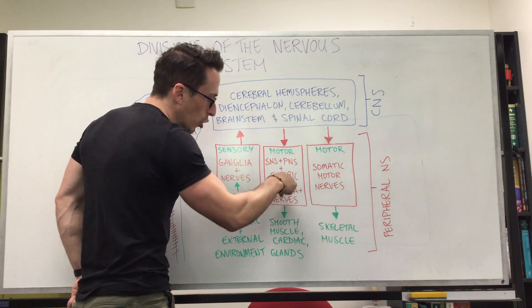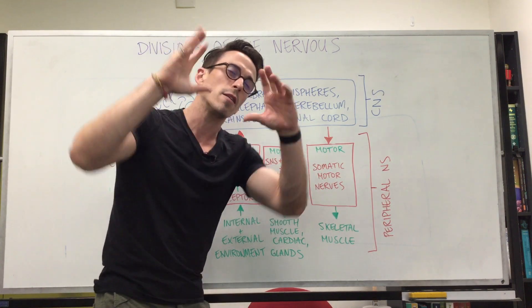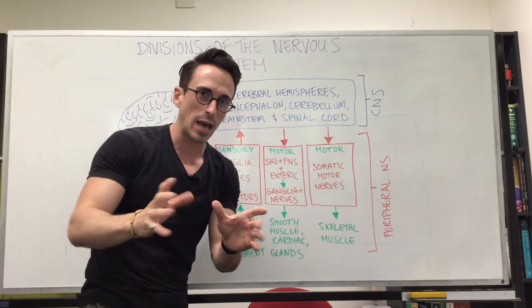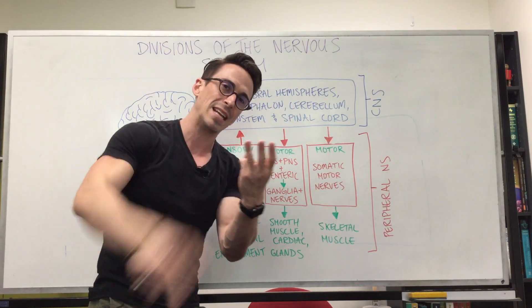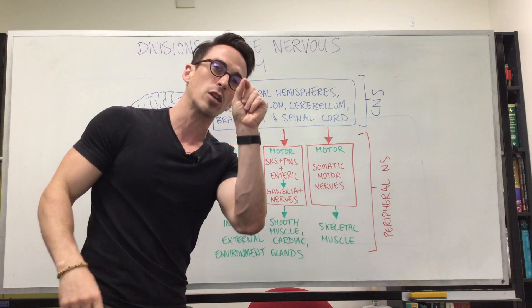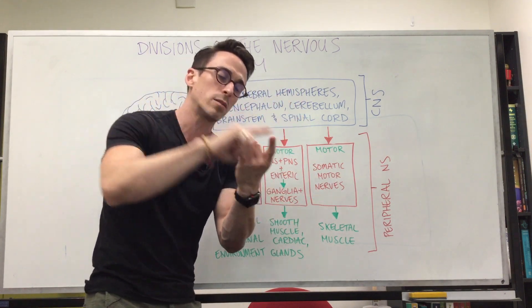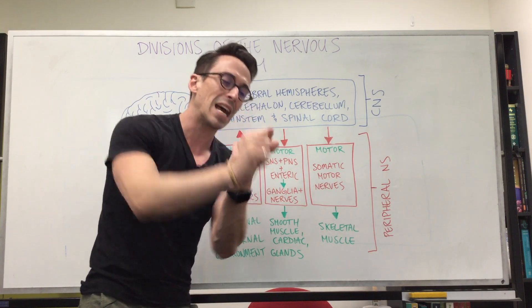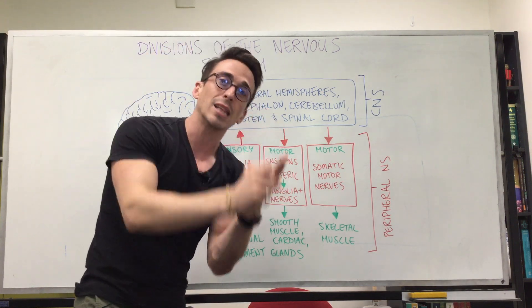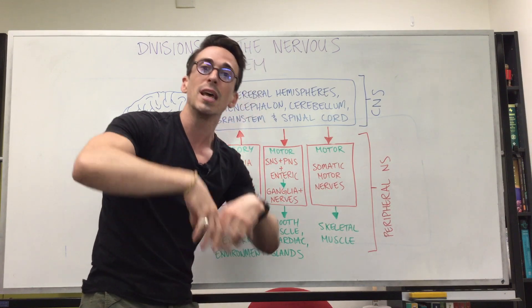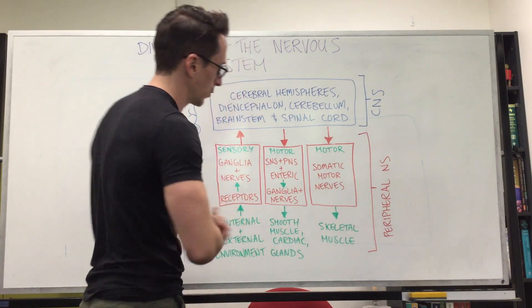That sends signals through ganglia and nerves. The visceral portion of the peripheral nervous system, sympathetic, parasympathetic, enteric, innervates very specific parts of the body. It's smooth muscles because it's unconscious, cardiac muscle, and glands. Glands release hormones and different types of fluids.